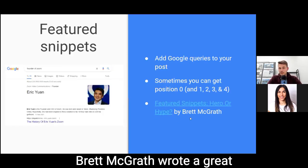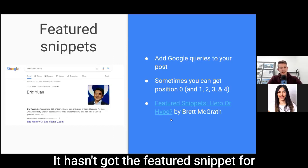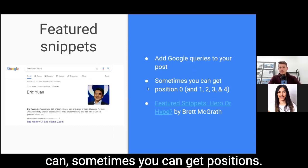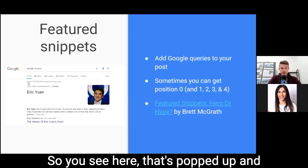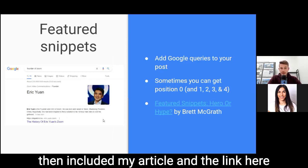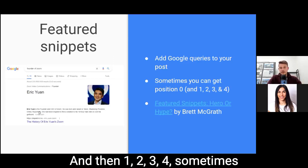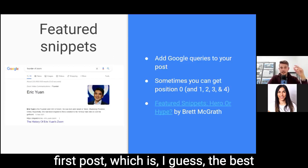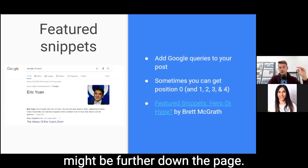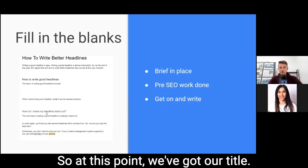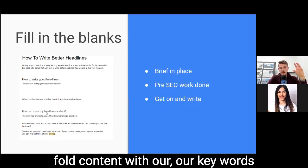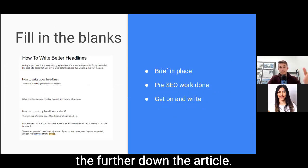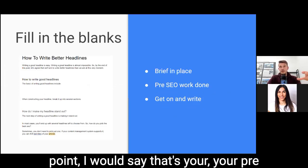Brett McGrath wrote a great post on featured snippets. You can sometimes get position zero — before any results — which is the featured snippet box showing the answer and linking to your article. Sometimes the first ranked post and the featured snippet are the same; sometimes they're different. At this point, with your title, above-the-fold content, and Google queries further down the article, your brief is in place — your pre-SEO work is done, putting you in a good position to just get on and write.